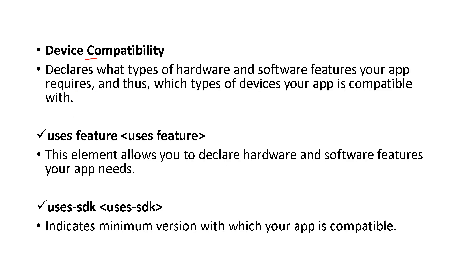Next is device compatibility. The first element is uses-feature and the next is uses-SDK. Uses-feature declares the hardware and software features your application needs. Uses-SDK specifies the minimum version with which your app is compatible, as well as the target version. The version of the operating system should be above this minimum version and up to the target version.